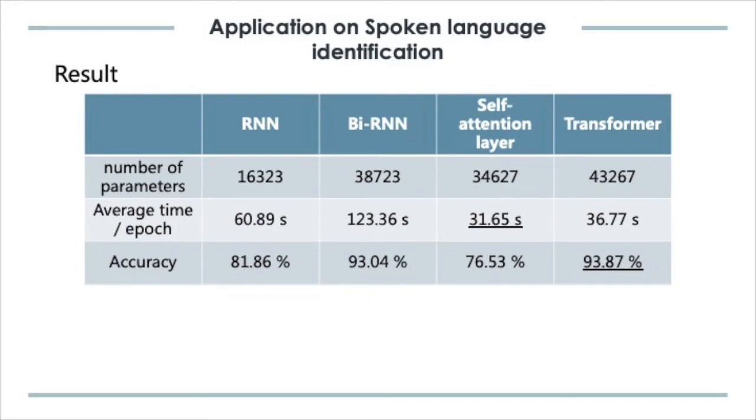We trained 50 epochs for each model. As you can see, bidirectional RNN is the slowest during training because it has four layers of GRU. The one with only self-attention layer is the fastest. Bidirectional RNN and transformer performs the best, but transformer trains a lot faster.